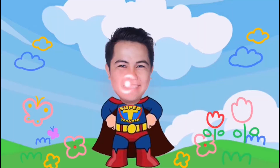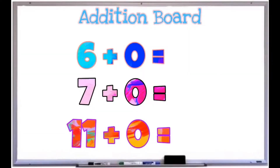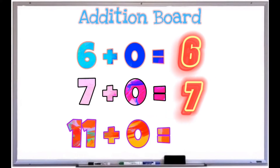How do we call it again? Good job! That was challenging, teacher. Now, what if we add nothing — or zero — to a number, teacher Danny? Can you add this number with zero? 6 plus zero is 6. And 7 plus zero is 7. And 11 plus zero is also 11.